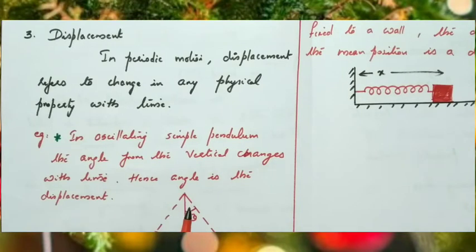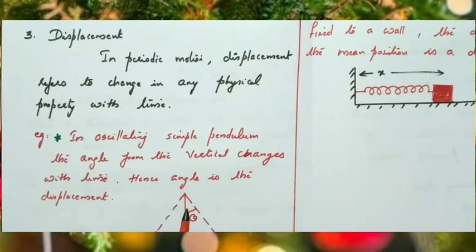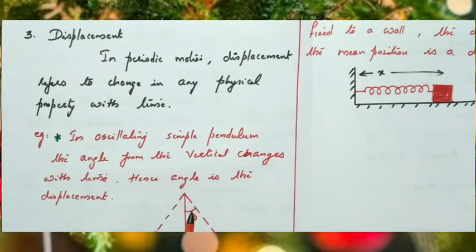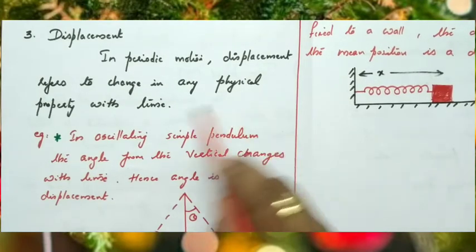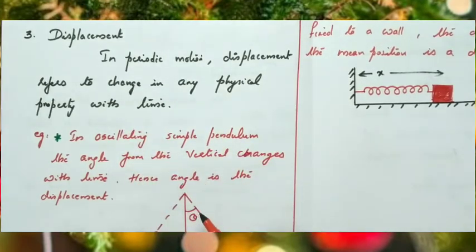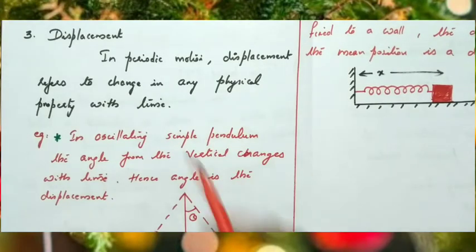The third term is displacement. In earlier chapters we defined displacement as the change in a particle's position vector — the shortest distance between the initial and final point. But here in this chapter, in periodic motion, displacement refers to the change in any physical property with time. Displacement is a general property here, meaning any physical quantity that changes with time is called displacement.